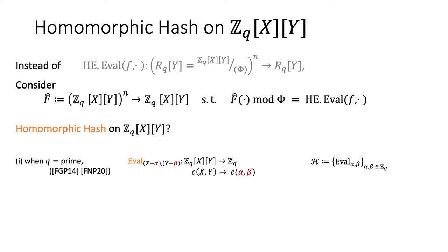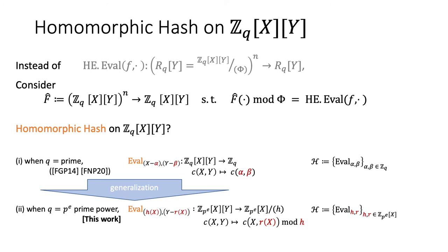In the previous work, one used an evaluation map which outputs an evaluation of constants alpha and beta on the input polynomial c(x,y). This is simple and useful, but it works only when the ciphertext modulus q is prime. In our work, we generalized the previous work and proposed a homomorphic hash which also works on a ciphertext modulus q that is a power of a prime. Our homomorphic hash is a generalization of the previous evaluation map. For an input polynomial c(x,y), we substitute y with a polynomial r(x) in x, then modularly reduce the polynomial with another polynomial h(x). We can see that the previous evaluation map corresponds to the case with r(x) equal to beta and h(x) equal to x minus alpha. We can easily see that this hash is homomorphic.